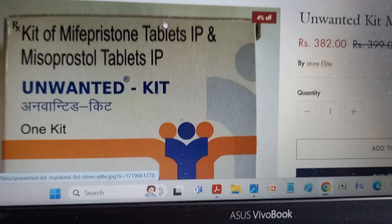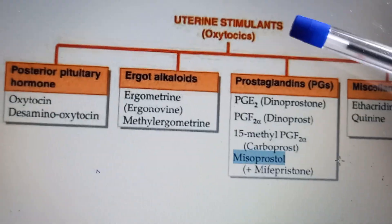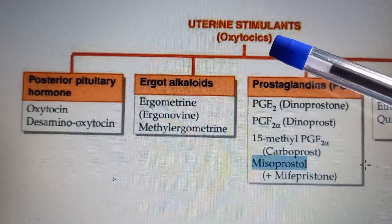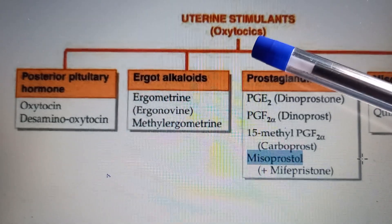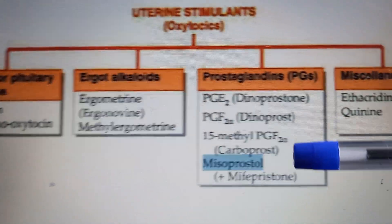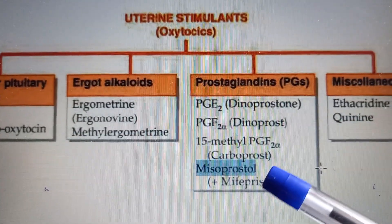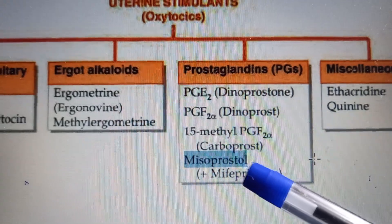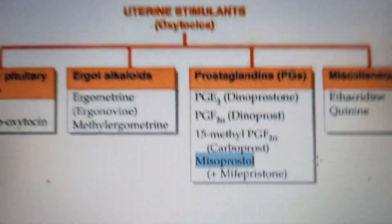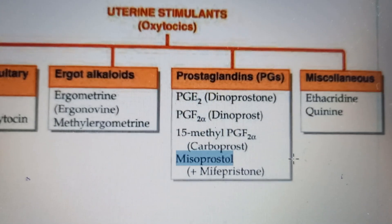So misoprostol is mainly used as a uterine stimulant — it is oxytocic, like oxytocin. It makes the uterus contract and expels the contents. That is the intent of misoprostol as a prostaglandin analogue.